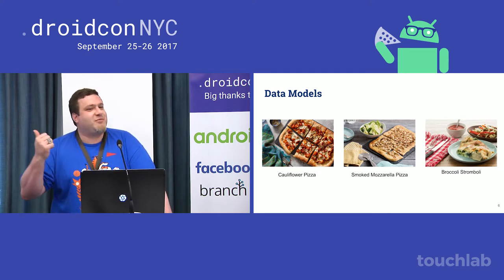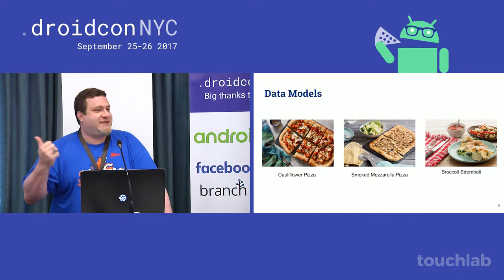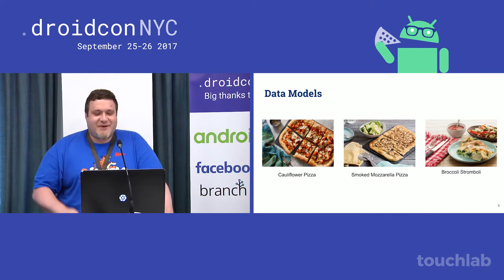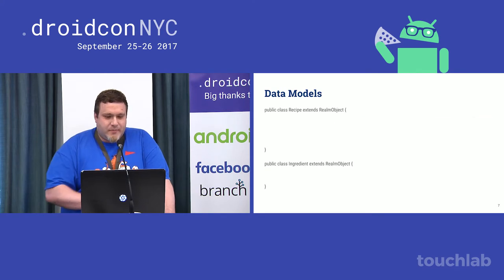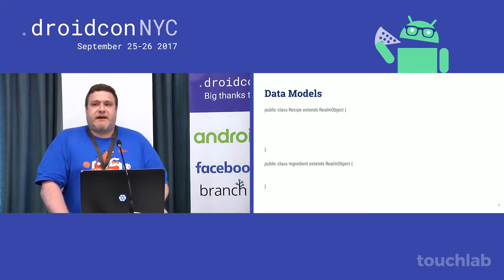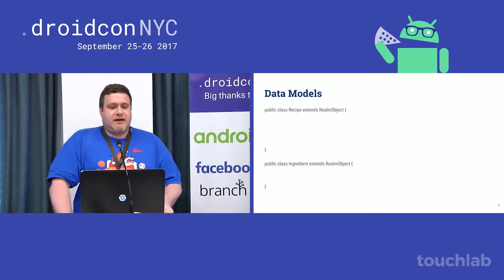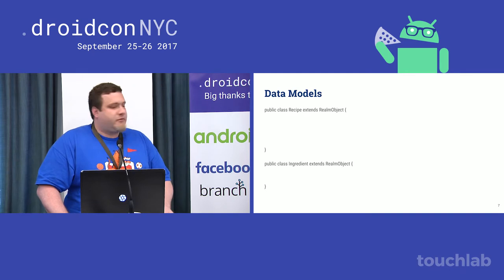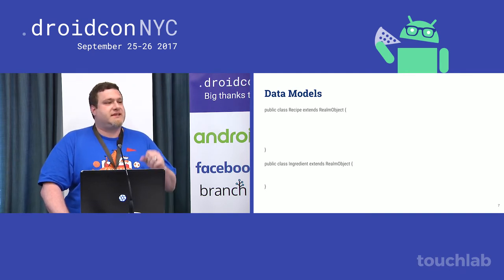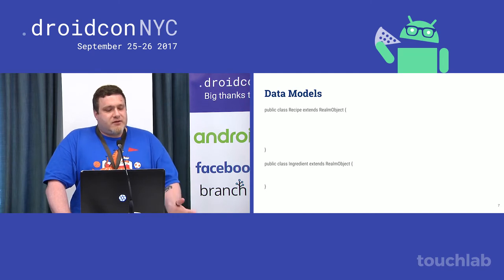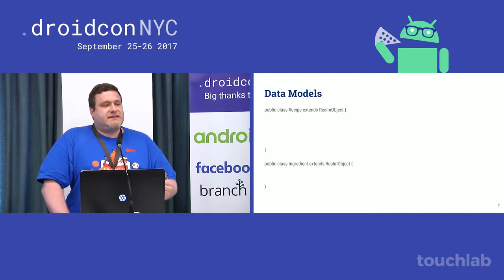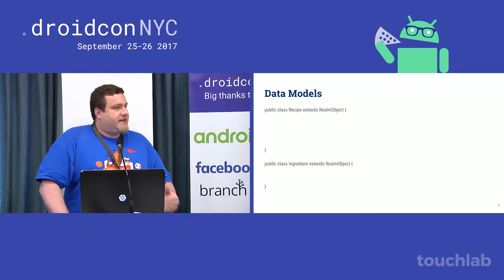These are all real Blue Apron recipes that you too can cook yourself. So we know our domain — let's start defining our schema. In SQLite, this is where you would define a bunch of tables and your relationships, set up your indices, all of that. In Realm, you just define your data model because the data model itself is your schema.